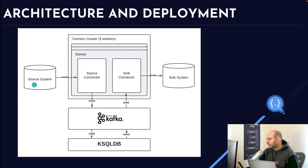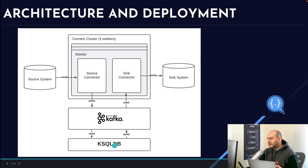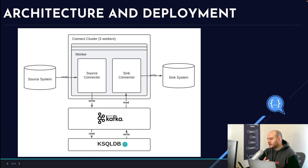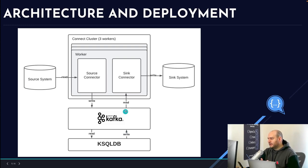The read operation reads from the source system and transforms it into a format that Apache Kafka can understand. Then the sink connector reads from Kafka and writes it into the sink system. On the other hand, ksqlDB is a different application that can also read and write. The full circle is: read from the source system, put it into Kafka, process it in ksqlDB with streaming logic, write it back to Kafka, then read from Kafka and put it into a sink system.